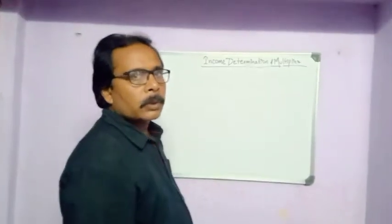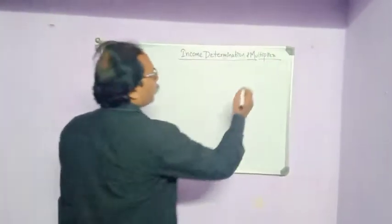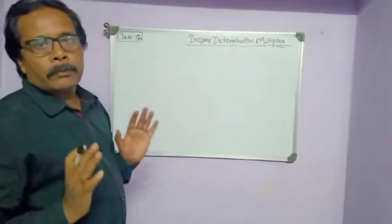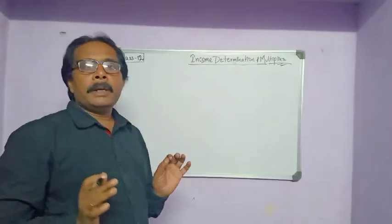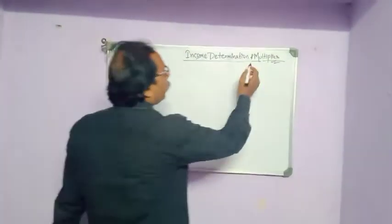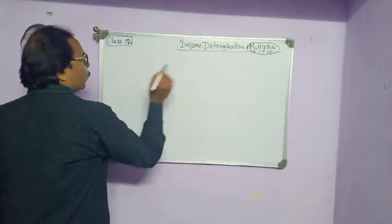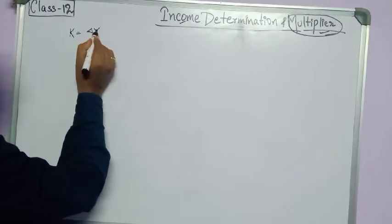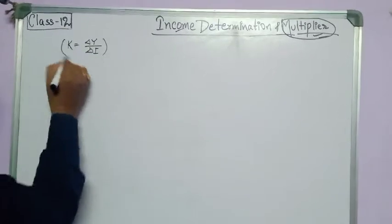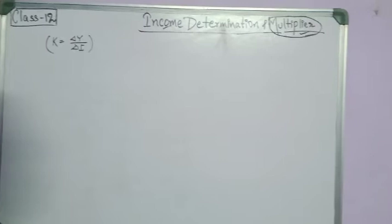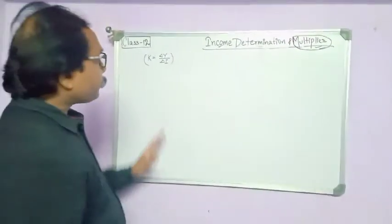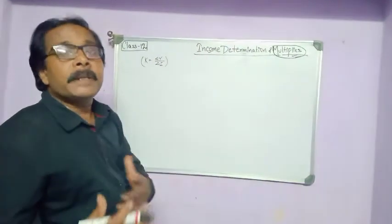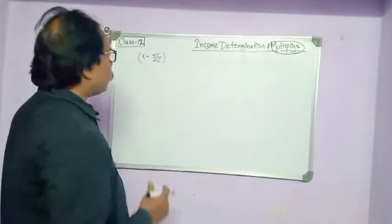Hello my dear students. In this video we will learn about the multiplier, because we have done the determination of income by two methods. First was AD equal to AS, and S equal to I. So in this video we will learn only about the multiplier.